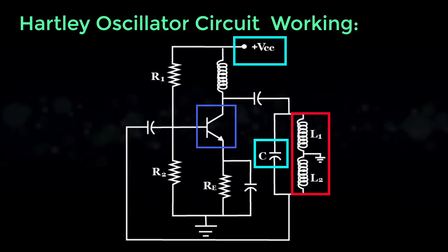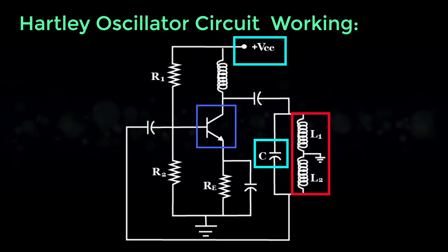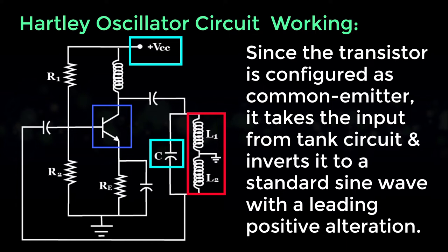Now the transistor comes to the picture. The sine wave generated by the tank circuit is coupled to the base of the transistor through the capacitor CC1. Since the transistor is configured as common emitter,